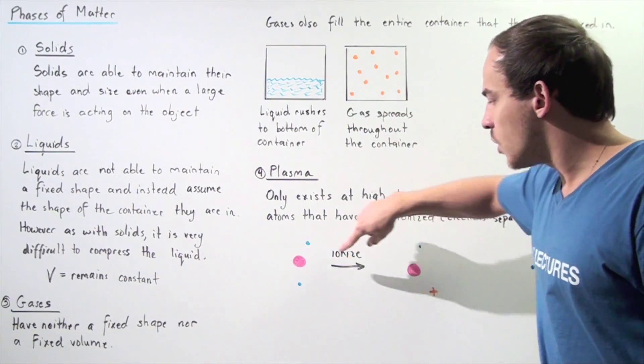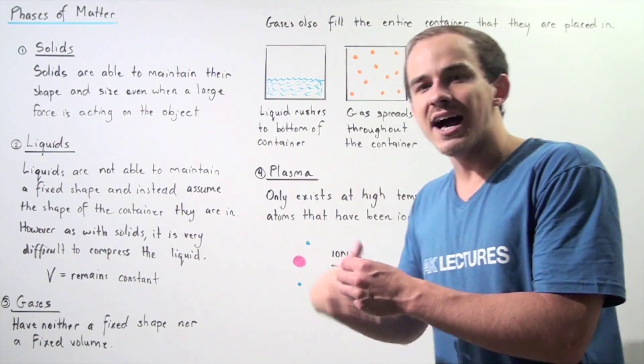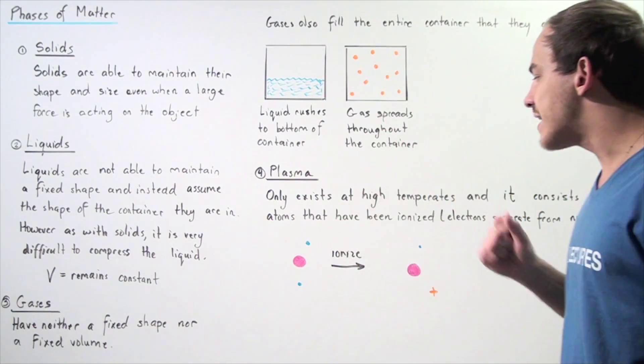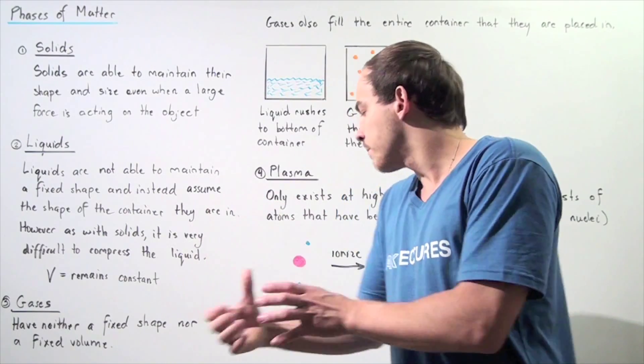So, we take an atom, let's suppose the atom is composed of two electrons, we ionize that atom, we take away that electron because we have enough energy which comes from the high temperatures.